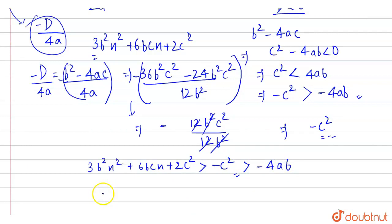So eventually we can write that 3b square x square plus 6bcx plus 2c square is always greater than minus 4ab. So this is our answer.